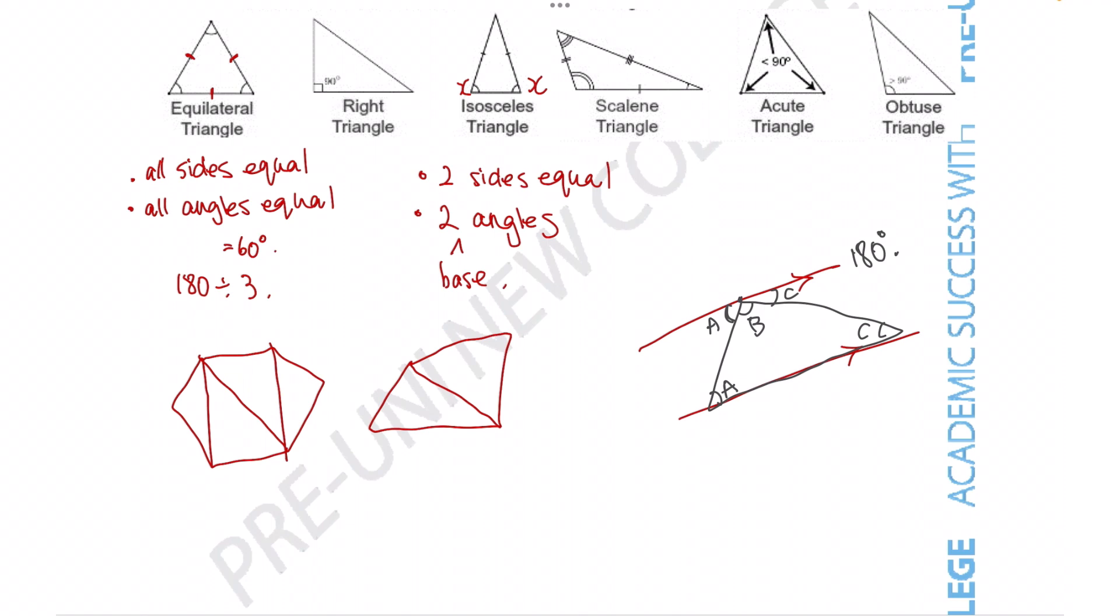And since we know that each triangle has an internal angle of 180, then a quadrilateral will have, since it's composed of two triangles, these quadrilaterals will have an angle sum of 360 degrees. And you can use that kind of knowledge to figure out the angle sum of more complicated shapes.